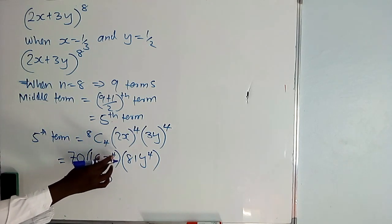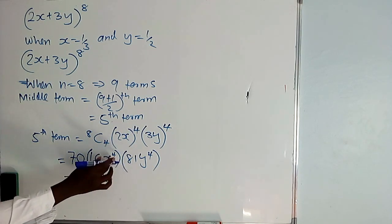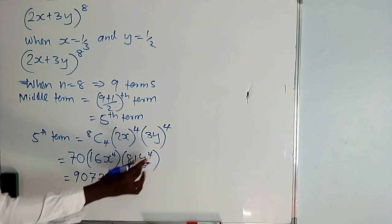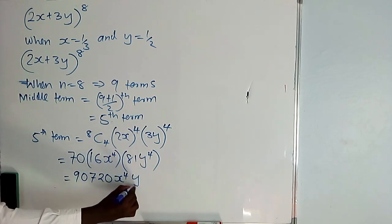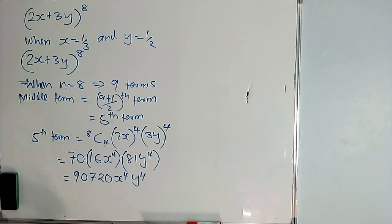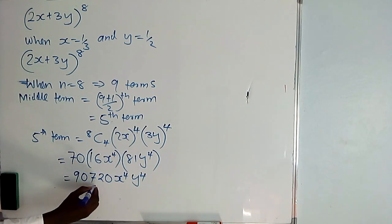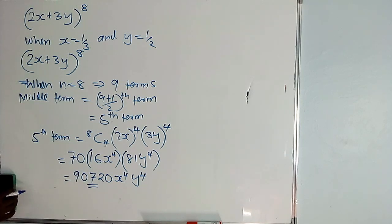So you found 9720, then it is times x raised to power 4, then it is times y raised to power 4. So the fifth term is 90720 x raised to power 4, y raised to power 4.